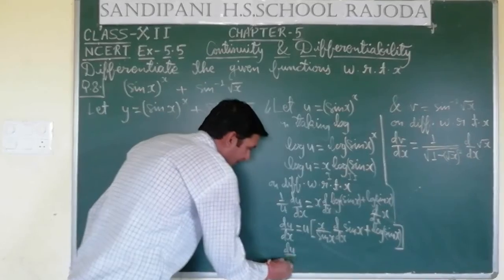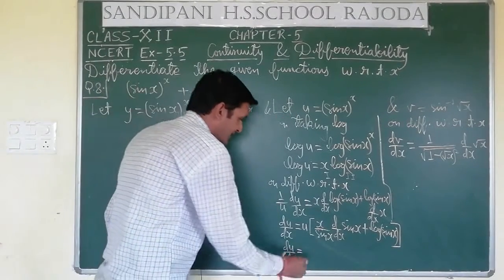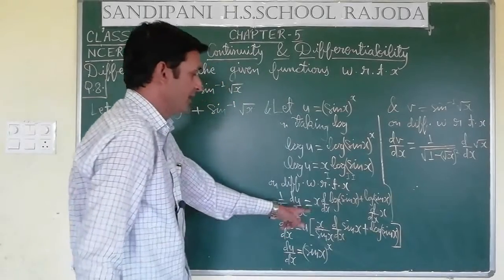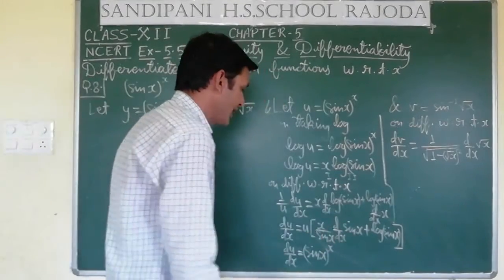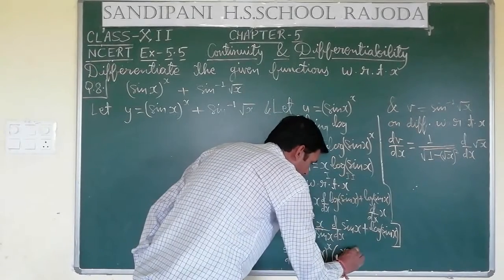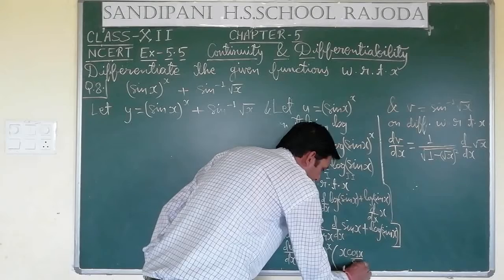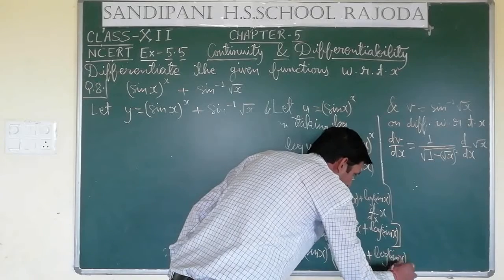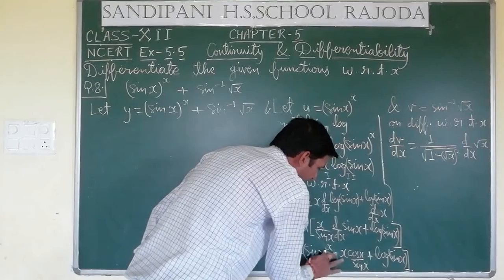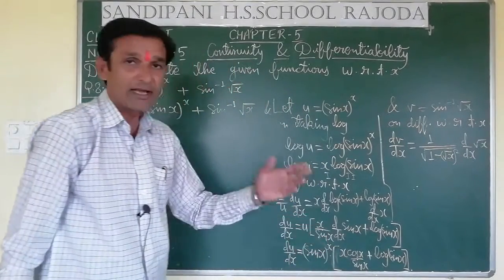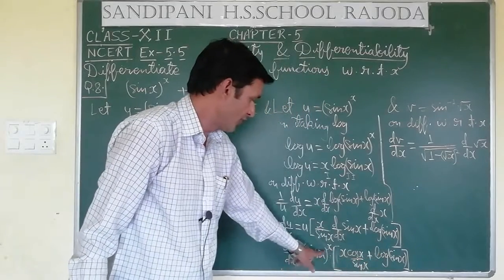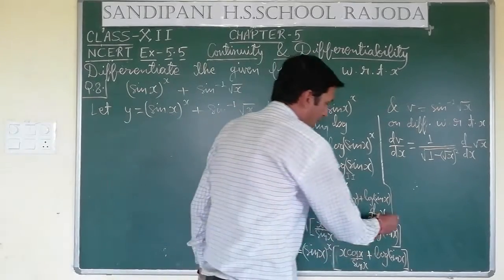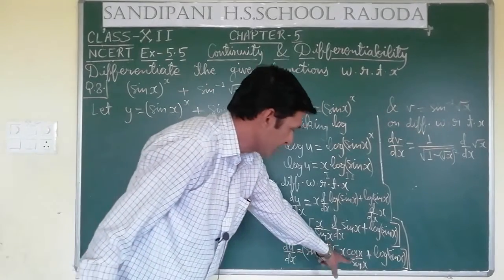Substituting the value of u: du by dx equals sin x raised to the power x, times (x cos x upon sin x plus log sin x). Now cos x upon sin x can be written as cot x. So du by dx equals sin x raised to the power x, times (x cot x plus log sin x).